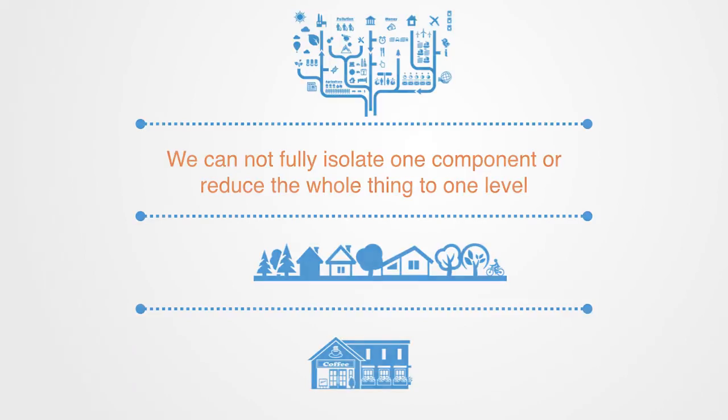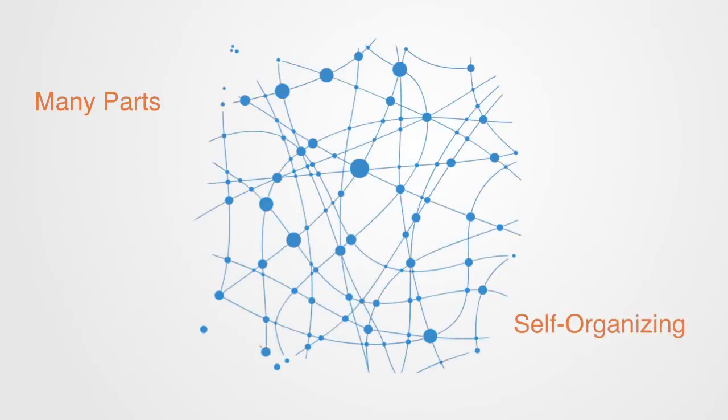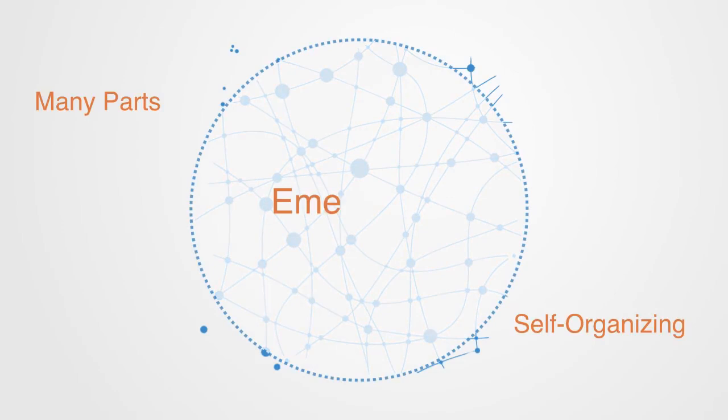So this is our first property to a complex system: many different parts that are distributed out, with local interactions and self-organization giving rise to new emergent levels on different scales.